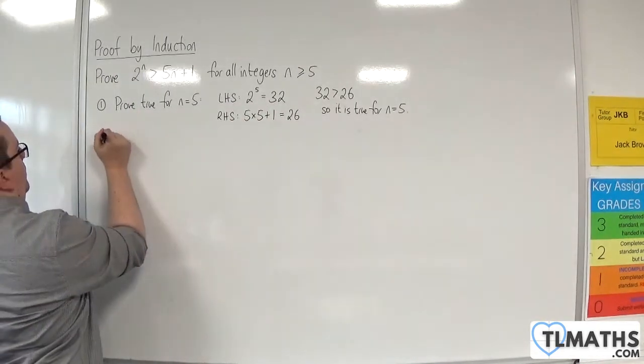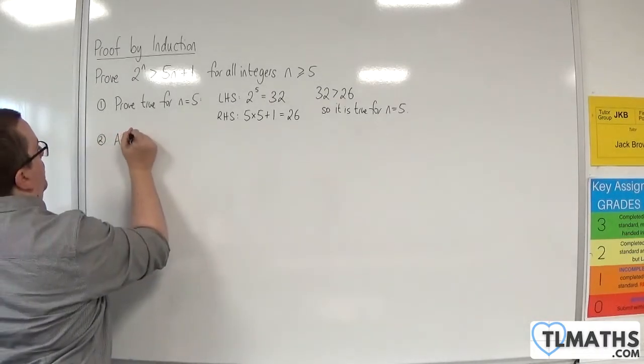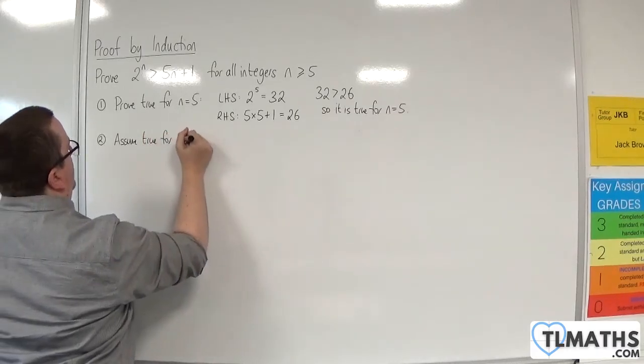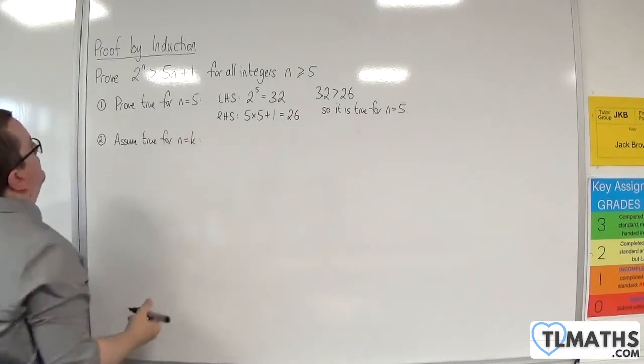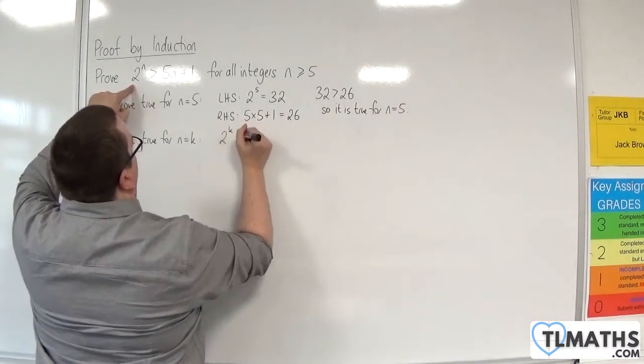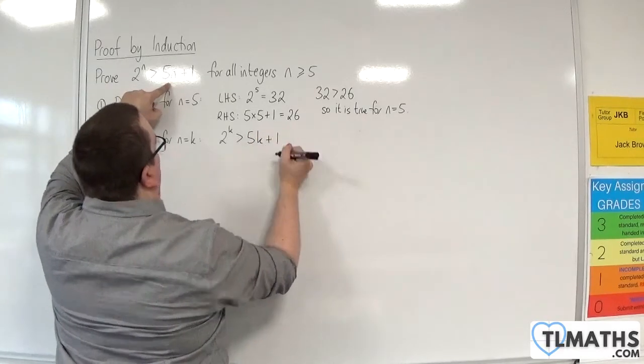Right, so step 2. Assume true for n equals k. So we would have 2 to the k is greater than 5k plus 1.